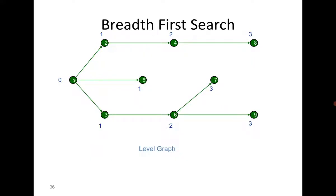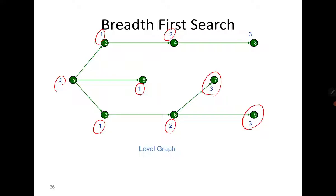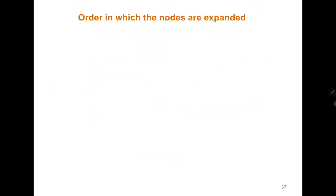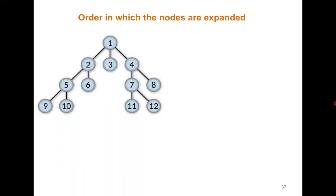You can also see the levels shown here: we started at level 0. In the next step we visited these 3 vertices. Then in the next step these 2 vertices. And in the last step these 3 vertices were visited. This is how BFS works.